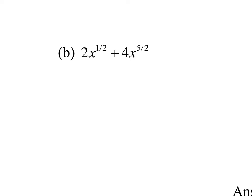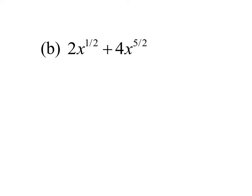The next problem is 2x to the one half plus 4x to the five halves. When you have radicals, we want to work with them in exponential form, and you need confidence in factoring and simplifying those terms. In factoring, look for anything they have in common. The coefficients 2 and 4 both have a 2 in common. The variables x to the one half and x to the five halves are both x's. The question is how many can we pull out — it's always the smaller of the two powers. One half is smaller than five halves, so we pull out x to the one half.